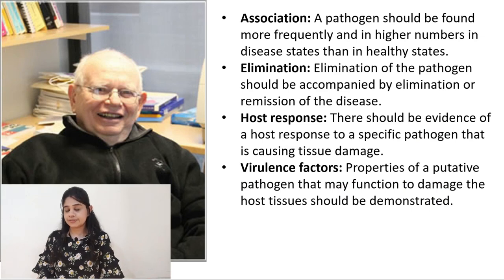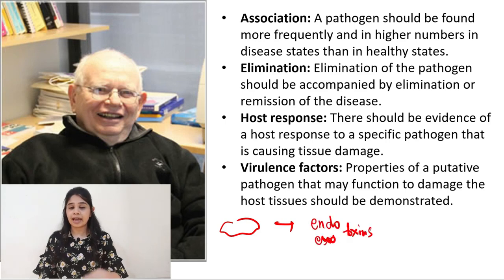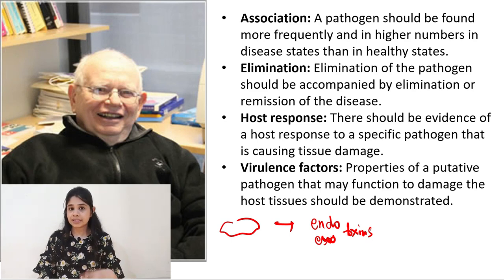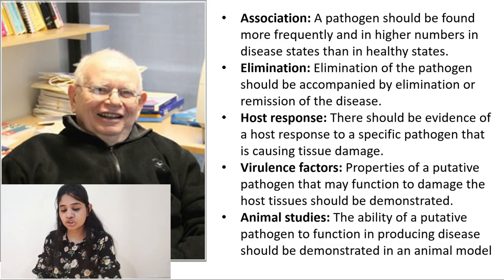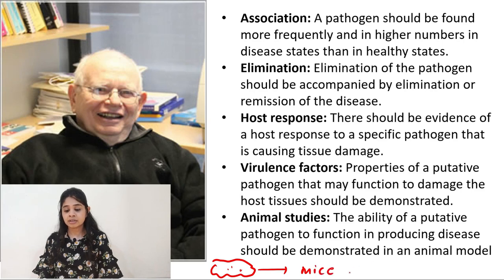The fourth postulate is the virulence factor: the pathogenic microorganism should be able to release certain virulence factors in the form of endotoxins or exotoxins, or through certain organelles associated with the bacteria itself, such as fimbriae and flagella. These virulence factors should demonstrate damage to host tissue. The last postulate covers animal studies: if the organism is isolated from a periodontal subject and inoculated into an animal such as a mouse, that mouse has to develop periodontal disease — it should be able to produce disease in an animal model.